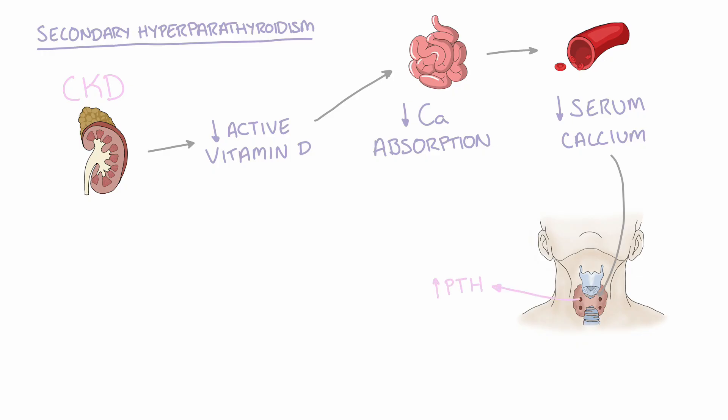Over time the parathyroid gland adapts to having to release more PTH by undergoing hyperplasia. Serum calcium levels in patients with secondary hyperparathyroidism will either be low or normal, because the parathyroid glands are fighting an uphill battle attempting to restore serum calcium levels as there is an ever-worsening vitamin D deficiency in CKD.